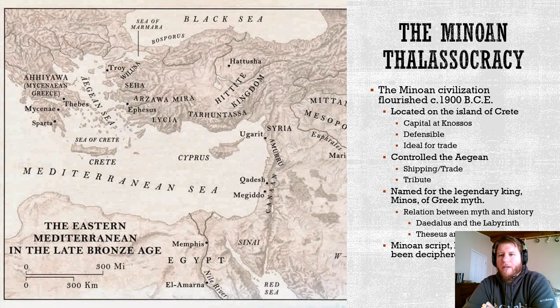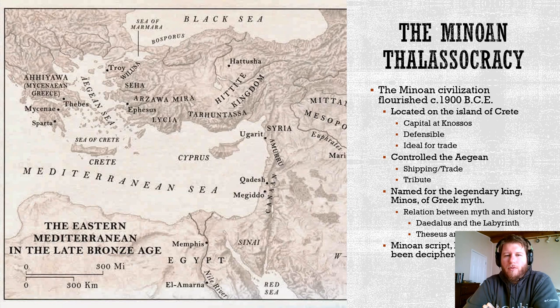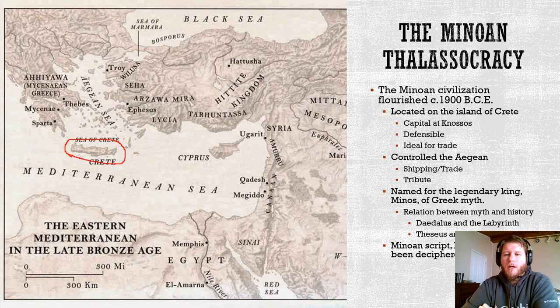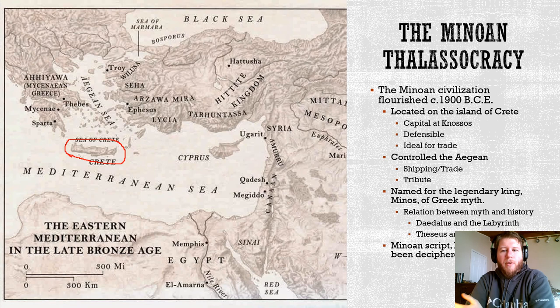The Minoan thalasocracy — a thalasocracy is government or dominance or power held through the sea. The Minoan civilization began about 3100 BCE and was really at its height around 1900 BCE. It's located on the island of Crete, and the capital was Knossos. It was a defensible location — Crete itself is a defensible island, ideal for trade, allowing control of the Aegean for both shipping and a tributary service. Basically, you would hold sea dominance and other groups of people would pay tribute to be able to trade in the seas you controlled.